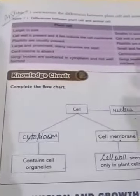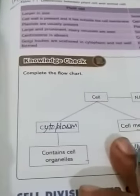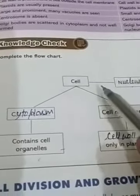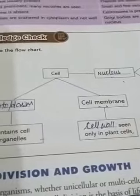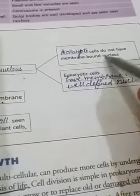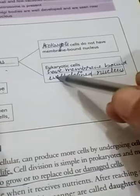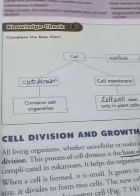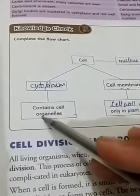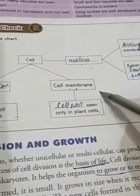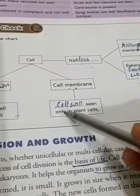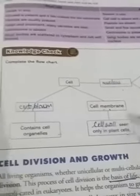So these are the basic differences between plant cell and animal cells. Now it is time for a knowledge check — you have to complete this flow chart. A cell has the basic features: cytoplasm, cell membrane, and nucleus. On the basis of nucleus, cells are divided into two types: prokaryote and eukaryote. Prokaryote cells do not have a membrane-bound nucleus, while eukaryotic cells have a well-defined membrane-bound nucleus. Cytoplasm contains all cell organelles, cell membrane is present around the cell, and cell wall is also present but only in plant cells. Thank you class, we continue in the next part.